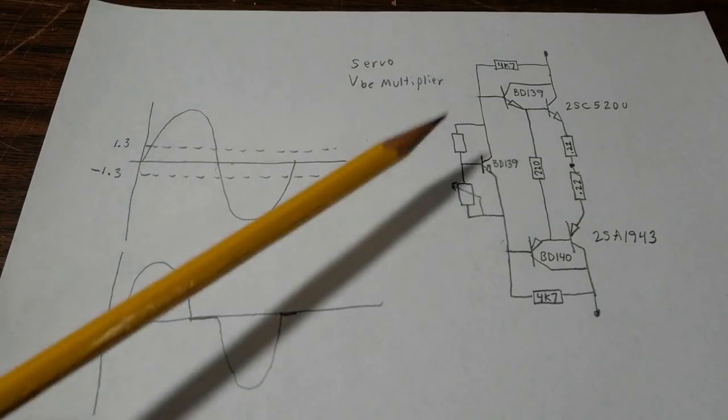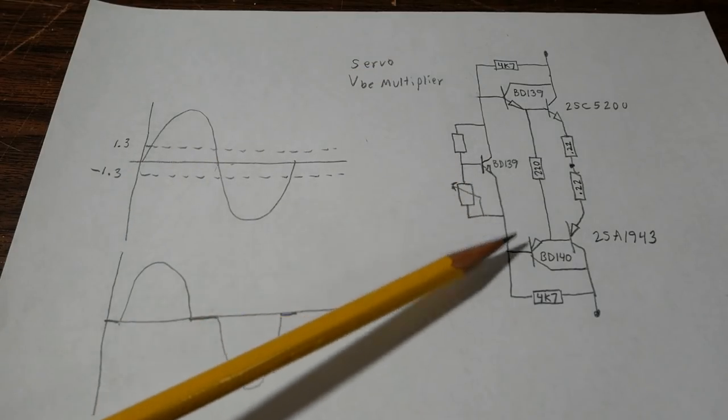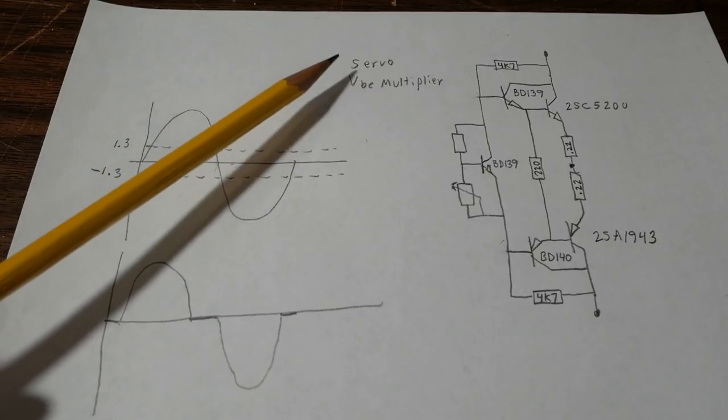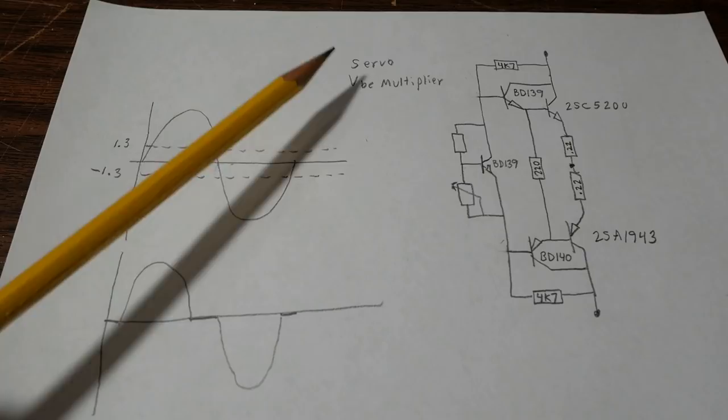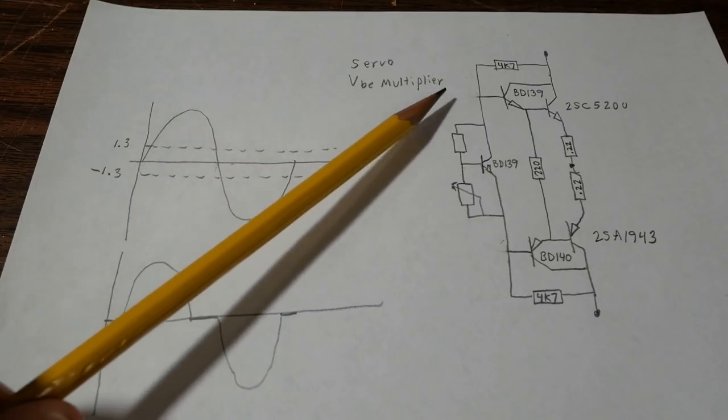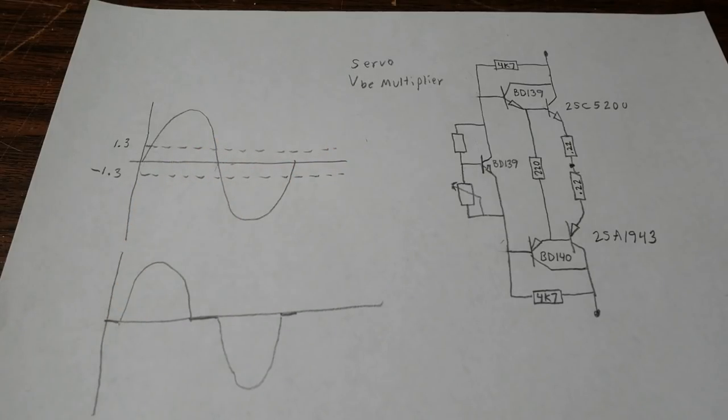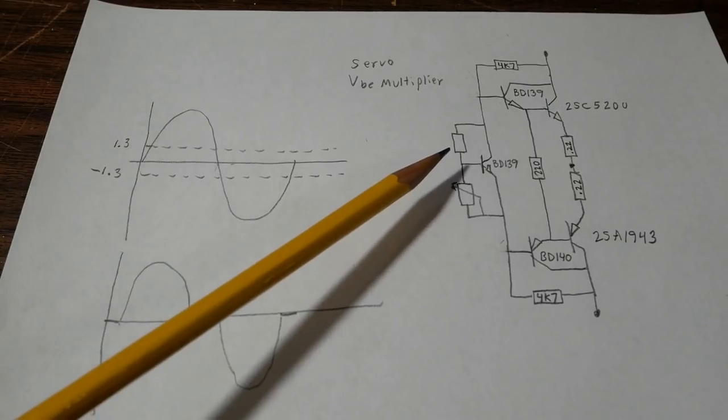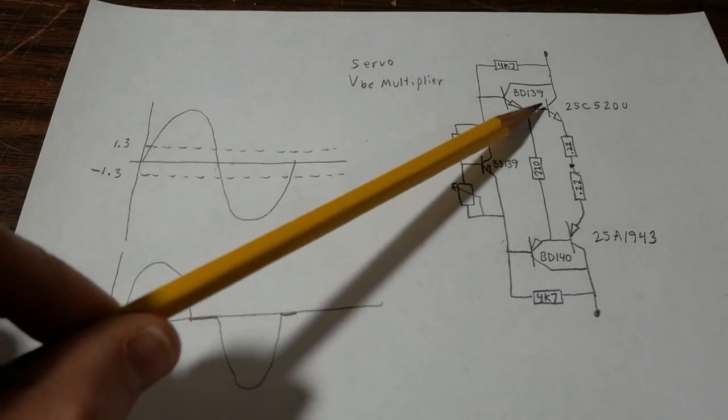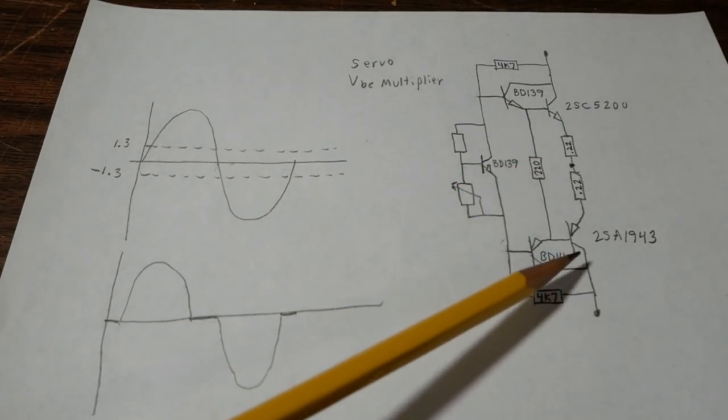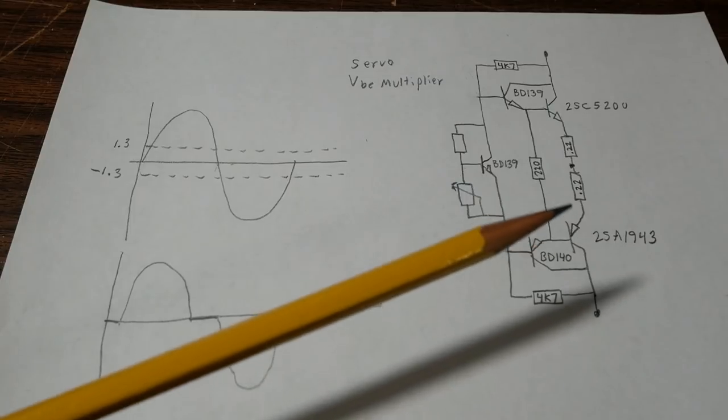Okay so let's talk about the biasing circuit. Sometimes you might hear it referred to as a biasing servo perhaps or even a VBE multiplier. This circuit has two purposes. The first thing is to eliminate crossover distortion. It keeps the output stage turned on just a little bit to eliminate that. So let me explain how that works.